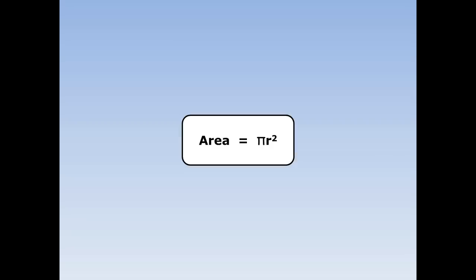The area of a whole circle is pi r squared, where pi is 3.14 and r squared means the radius times the radius.